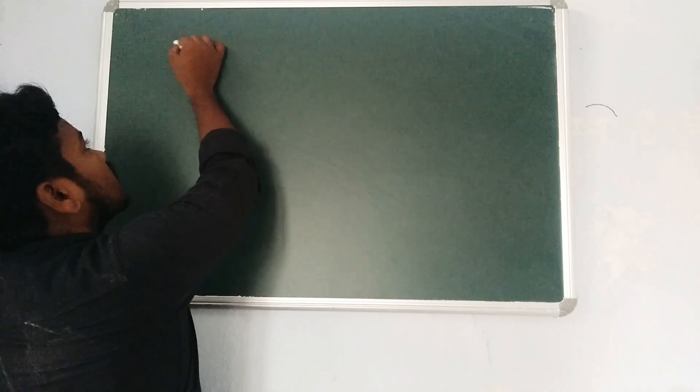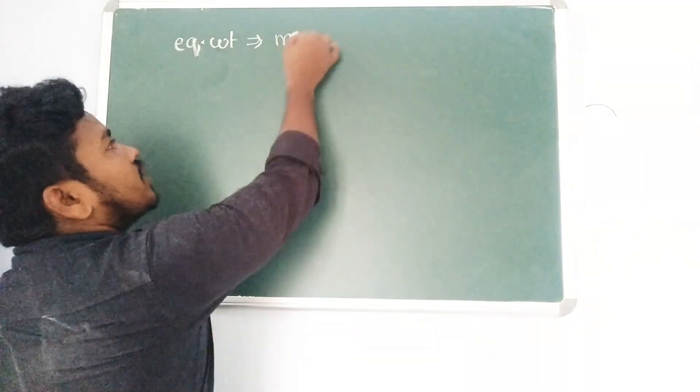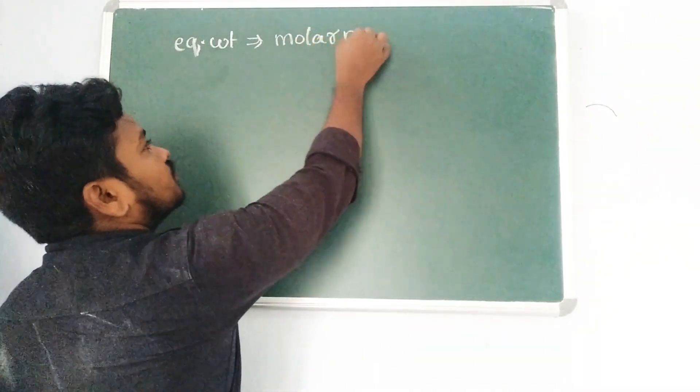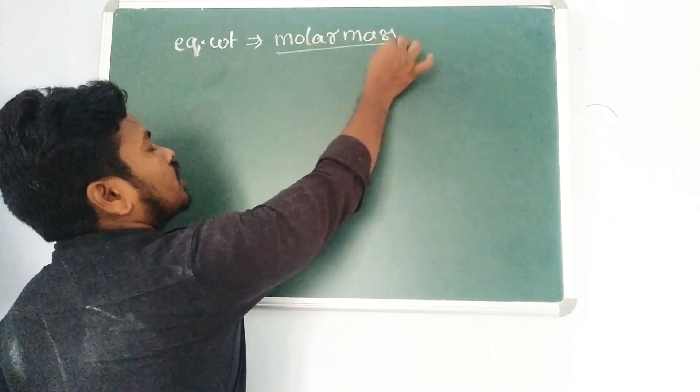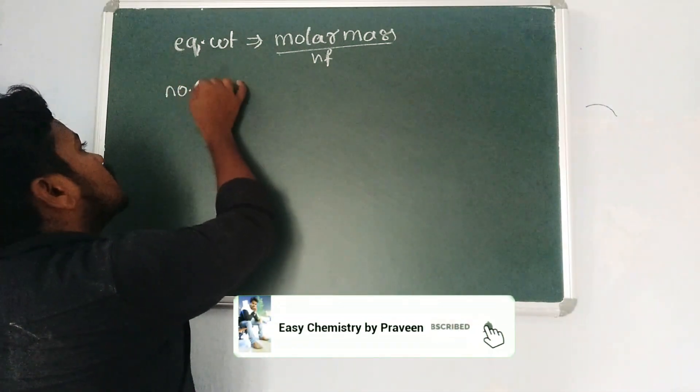Hello everyone, welcome to Easy Chemistry Praveen. Today we are going to discuss how to calculate the valency factor, also called the n-factor. The n-factor is a very important concept. One major use is in calculating equivalent weight, where equivalent weight equals molar mass divided by n-factor.